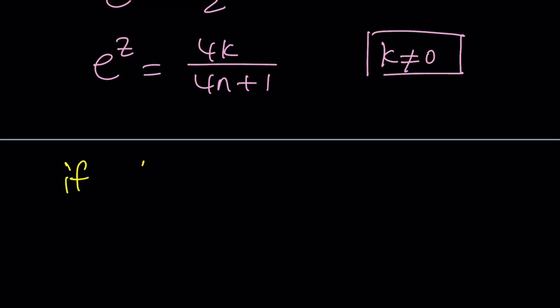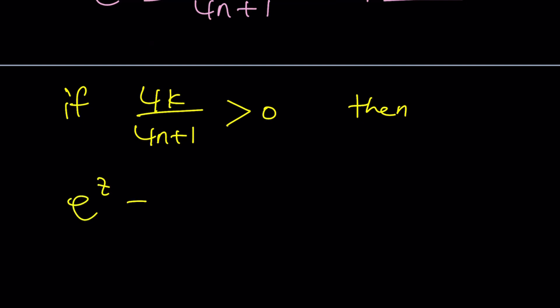If 4k over 4n plus 1 is greater than 0, then this number can be written as follows: 4k over 4n plus 1 is just a positive real number multiplied by e to the power 2 pi mi. Remember, this is one in the complex world.